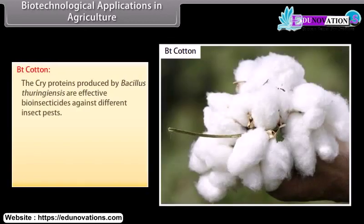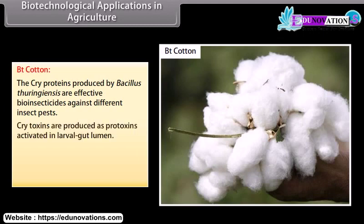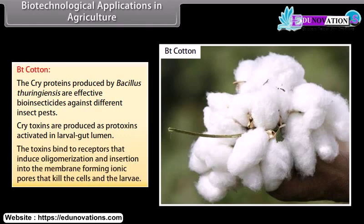Biotechnological Applications in Agriculture — BT Cotton: The cry proteins produced by Bacillus thuringiensis are effective bio-insecticides against different insect pests. Cry toxins are produced as protoxins activated in larval gut lumen. The toxins bind to receptors that induce oligomerization and insertion into the membrane, forming ionic pores that kill the cells and the larva.